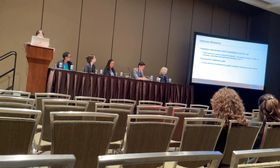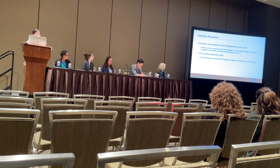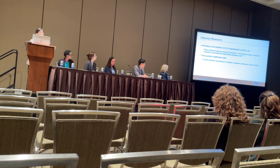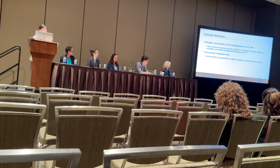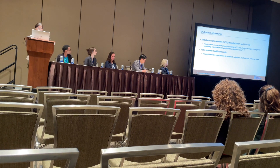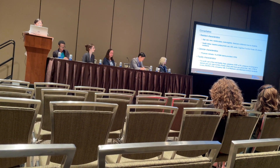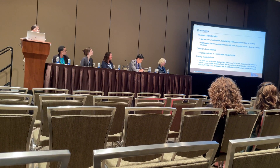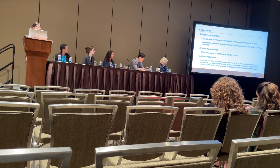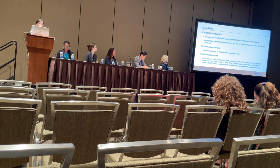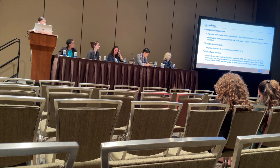Outcome measures included ambulatory care sensitive (ACS) hospitalization and ED visits, because these events are common among nursing home residents and are largely preventable with appropriate ambulatory care. We also looked at total health care costs, which were Medicare expenditures including outpatient, inpatient, and professional and other types of services. We included a rich set of covariates including residents' demographic characteristics, Medicare status indicators such as dual eligibility or entitlement due to disability, health status indicators such as baseline anti-psychotic use, ADL scores, cognitive function scales, and 65 chronic conditions, as well as clinician-level and facility-level characteristics.